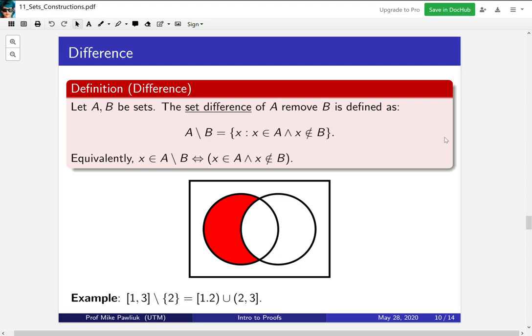So for example, if you take the set, the interval, closed interval 1, 3, and you remove 2, this will be the half open interval 1 to 2, union the half open interval 2 to 3. So you've essentially just removed the element 2.